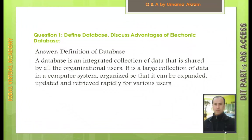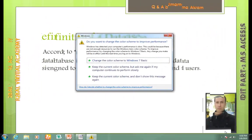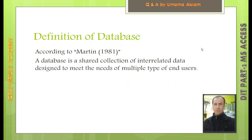Question number 1: Define database. Discuss advantages of electronic database. Answer: A database is an integrated collection of data that is shared by all organizational users. It is a large collection of data in a computer system organized so that it can be expanded, updated and retrieved rapidly for various users. According to Martin (1981), a database is a shared collection of interrelated data designed to meet the needs of multiple types of end users.